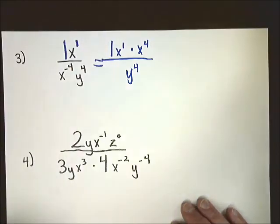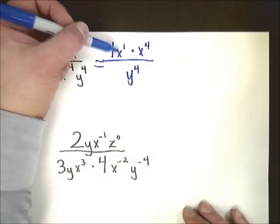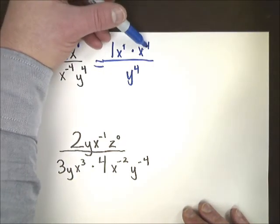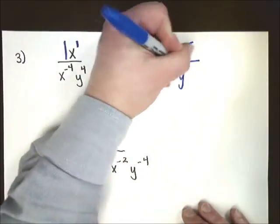I just kind of flip the order over so now that I can combine these two things together. X to the first times x to the fourth is 1 plus 4, so x to the fifth power, and the y is y to the fourth.